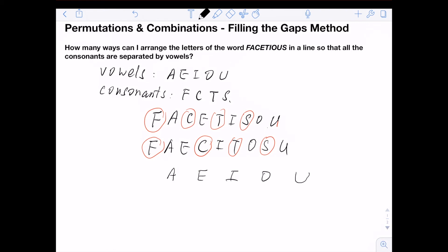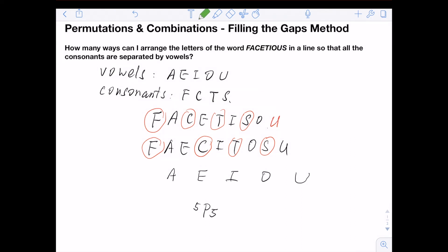These five vowels actually have 5P5 ways to arrange them. So let's say this is one of the arranging ways. These vowels create six gaps where I can put my consonants in.